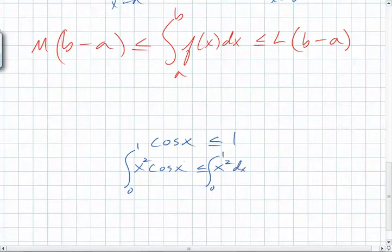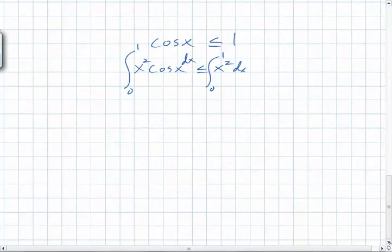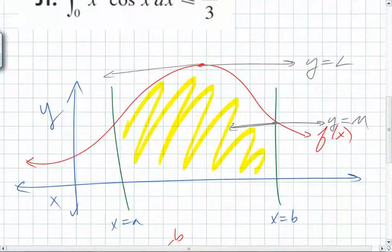Integrate. If one thing is always greater than the other, when you integrate, the integral is going to be greater than the other one, correct? What's the integral from zero to one of x squared? Oh, come on. One third. So you know that the integral from zero to one of x squared cosine x dx has to be less than or equal to? Is that exactly what you were trying to show? Yes.